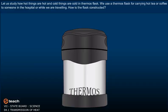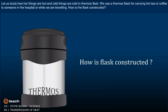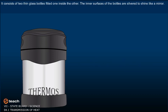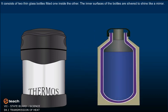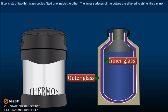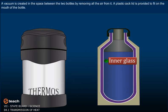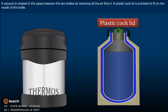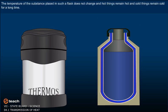Let us study how hot things are hot and cold things are cold in thermos flask. We use a thermos flask for carrying hot tea or coffee to someone in the hospital or while we are traveling. How is the flask constructed? It consists of two thin glass bottles fitted one inside the other. The inner surface of the bottles are silvered to shine like a mirror. A vacuum is created in the space between the two bottles by removing all the air from it. A plastic cork lid is provided to fit on the mouth of the bottle. The temperature of the substance placed in such a flask does not change and hot things remain hot and cold things remain cold for a long time.